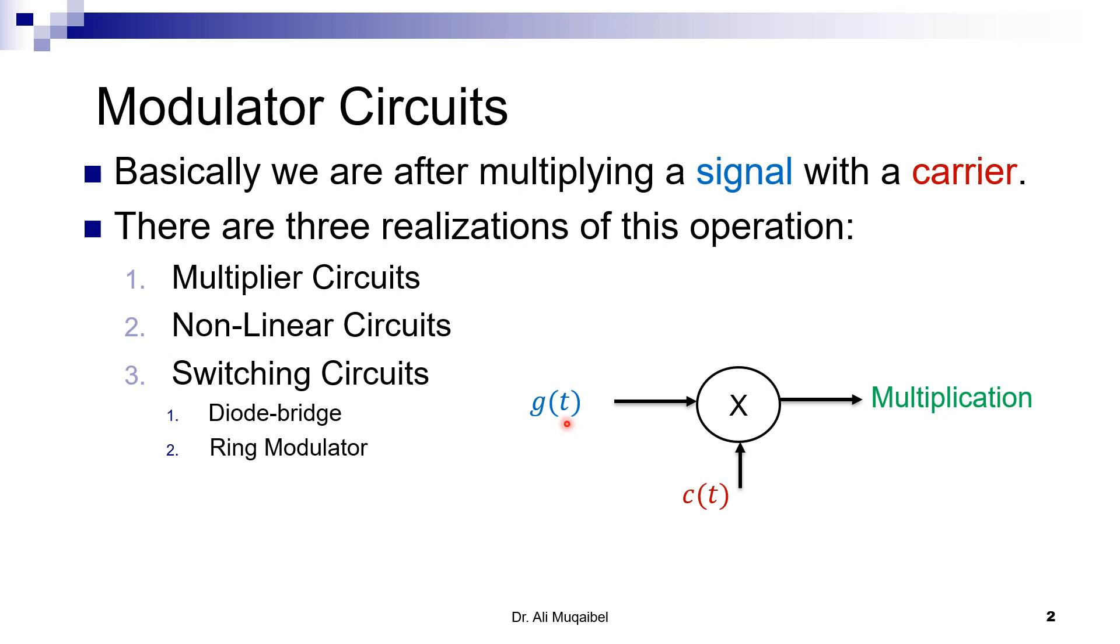To put it in an easy format, our objective is basically multiplying a signal by a carrier. How do we do this? There are different options: either direct multiplication circuits, nonlinear circuits, or switching circuits. There are two variants for switching circuits we're going to discuss: diode bridge and ring modulators.